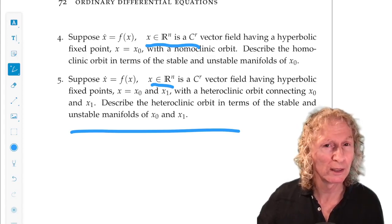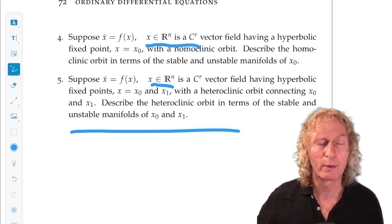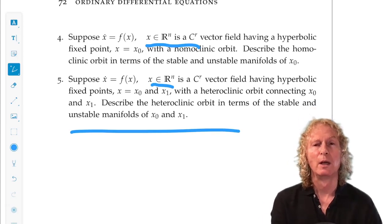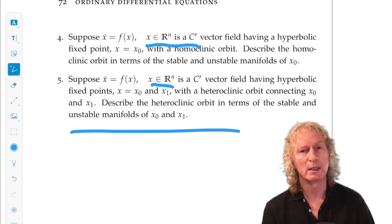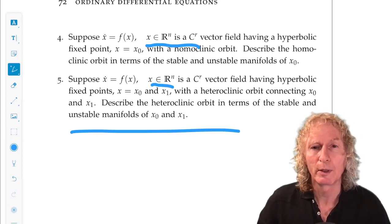And if you go back and look at the examples early on where I gave you, where I talked about or defined homoclinic and heteroclinic orbits, now you have the tools for describing them in terms of stable and unstable manifolds of the appropriate equilibrium.